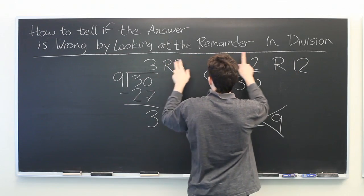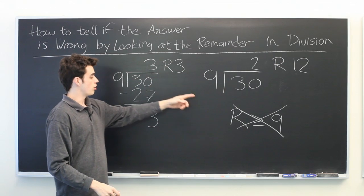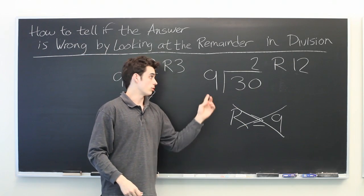So while these two answers are equivalent, this is the correct form, because the remainder should never be greater than or equal to the original number.